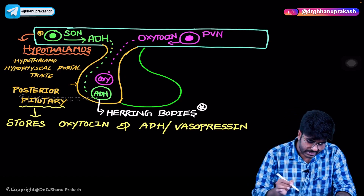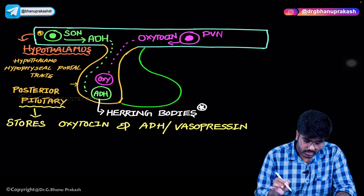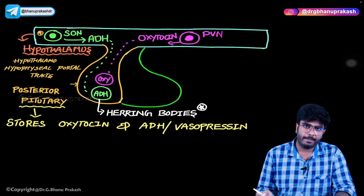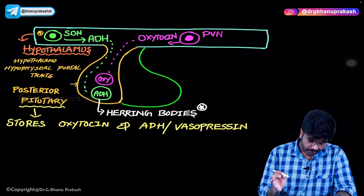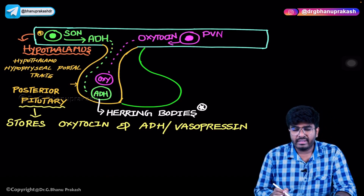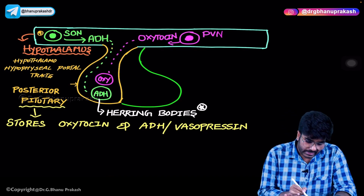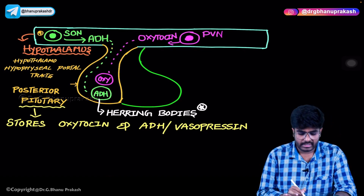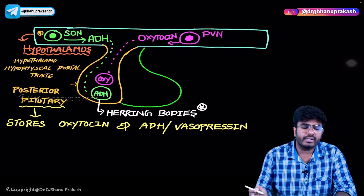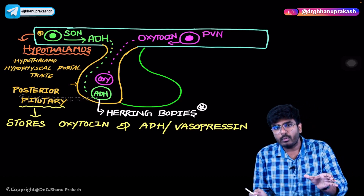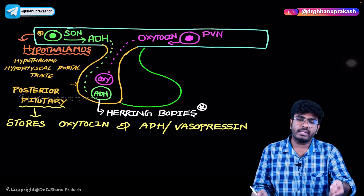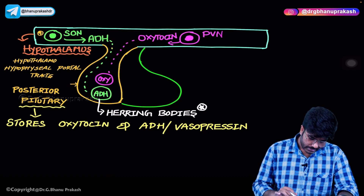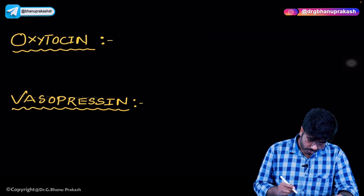ADH and oxytocin travel from the hypothalamus to the posterior pituitary, where they are stored in vesicles called Herring bodies. ADH and oxytocin are stored inside vesicles within the neurons, and those vesicles are called Herring bodies. Whenever oxytocin or ADH is needed, it is released from the posterior pituitary. So these hormones are released and stored in the posterior pituitary but produced in the hypothalamus.